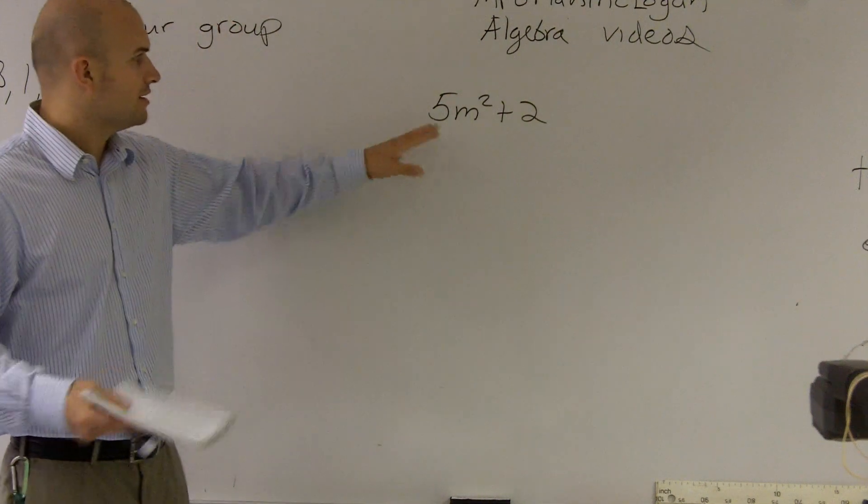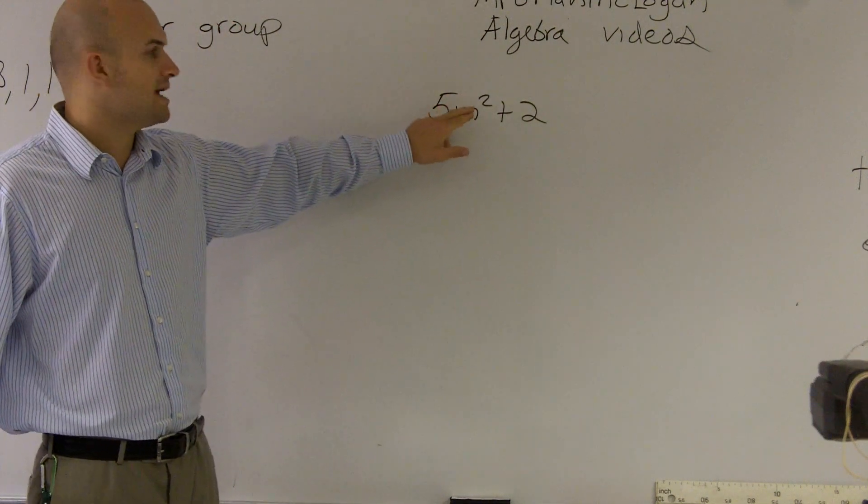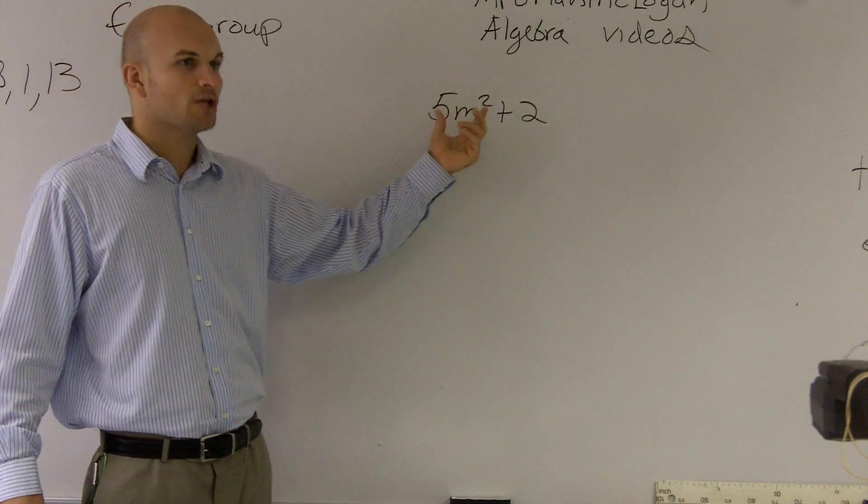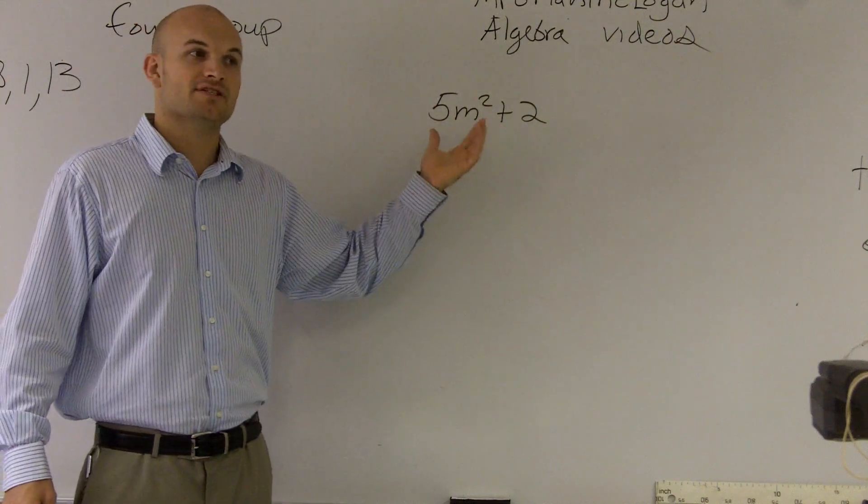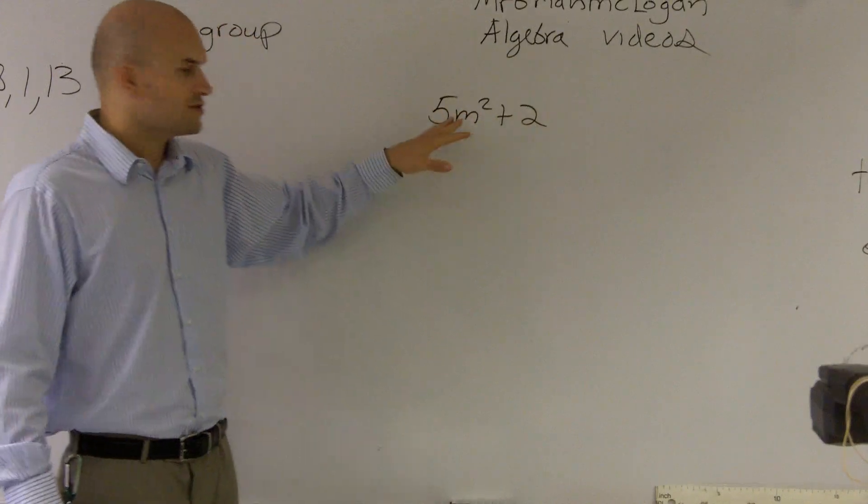First of all, we need to see what's going on here. Between the 5 and the m squared, we see that's a multiplication. There's no addition sign, no subtraction sign, no division sign or fraction representation.